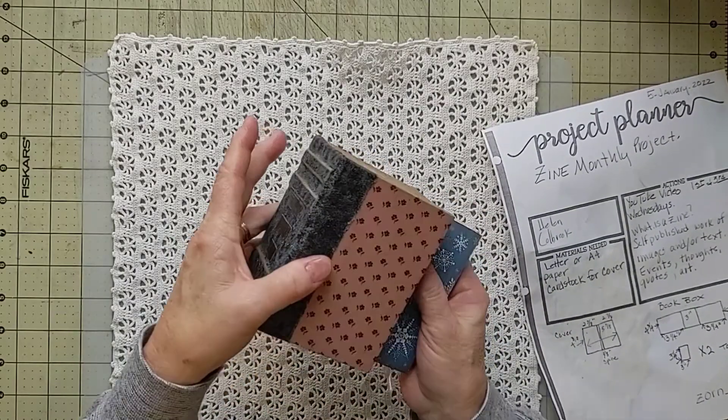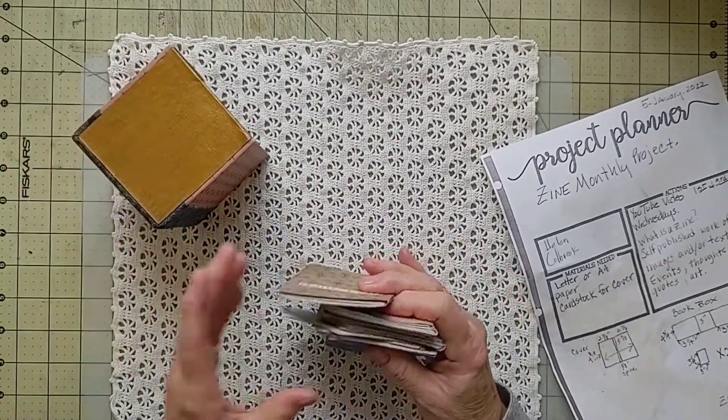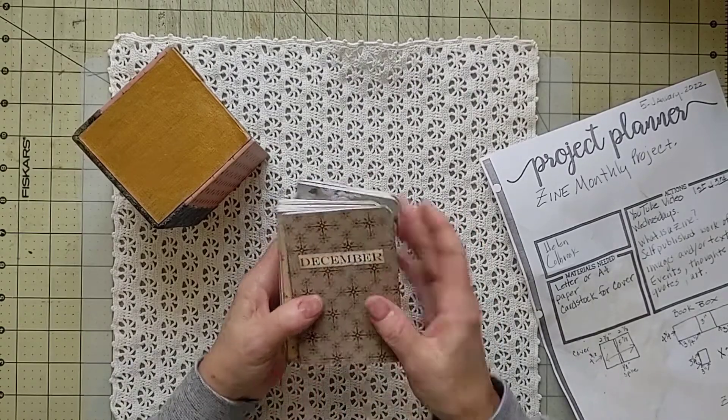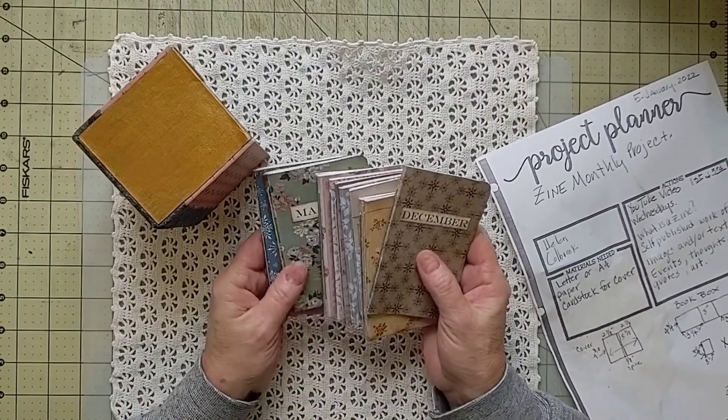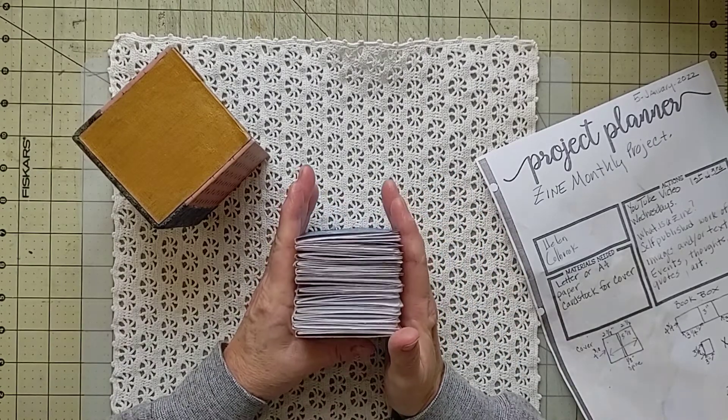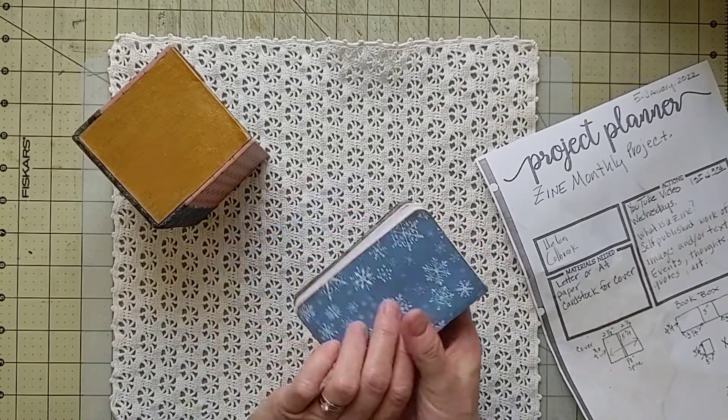So what I did was I took and made all my zines for the year. So I have them all put together so they're in there in order like that. And I kind of set them down on my mat and measured and tweaked a little bit till I got what I liked.